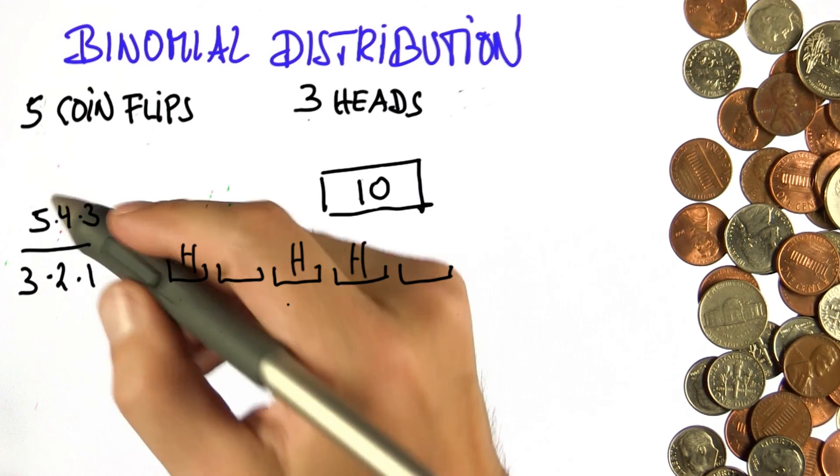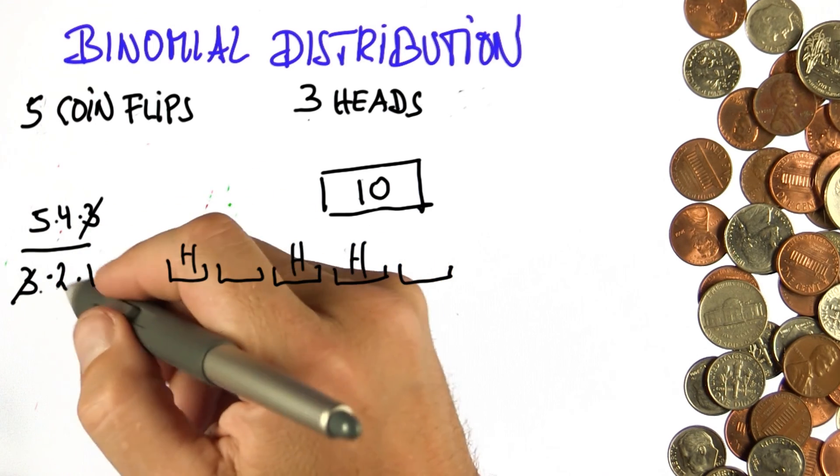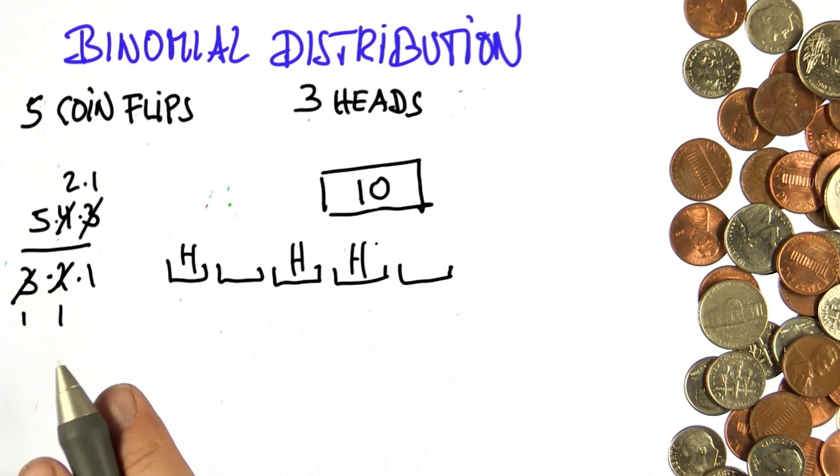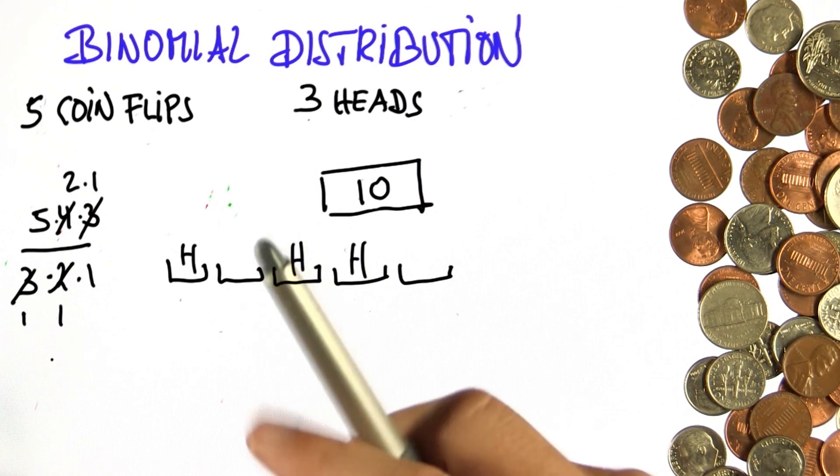So the result is 5 times 4 times 3 over 3 times 2 times 1 gives me 5 times 2 equals 10. And that is insightful. Thank you.